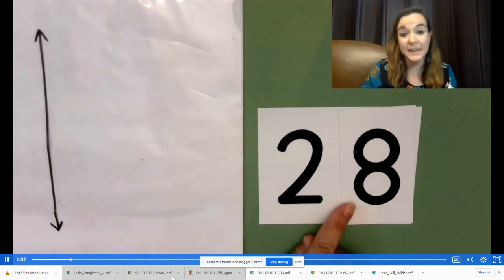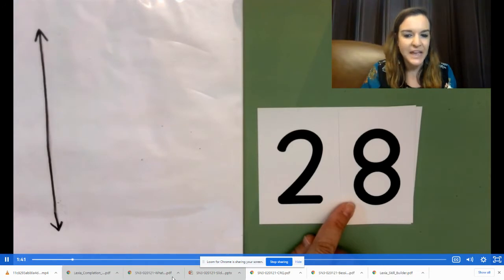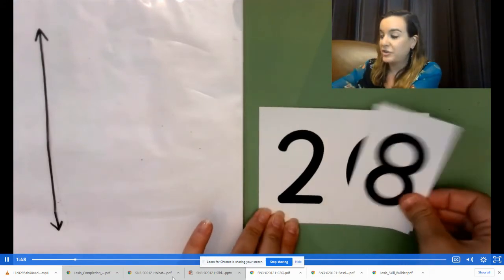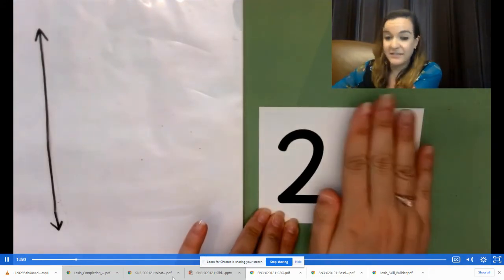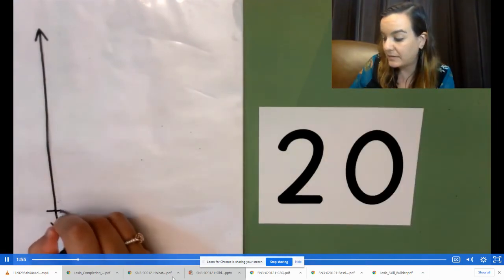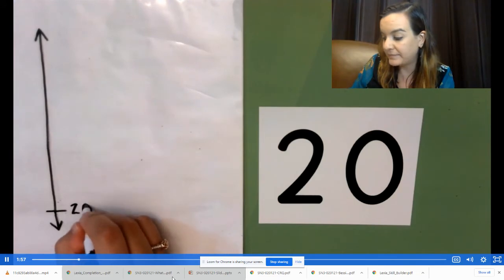Let's round 28 minutes to the nearest 10 minutes. How many tens are in 28? Two tens. Let's label that on the bottom tick mark of our number line.